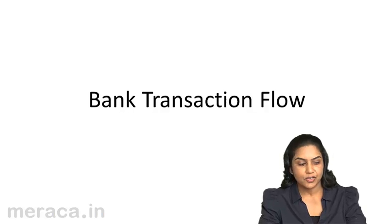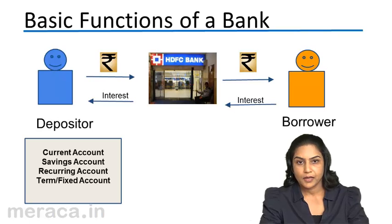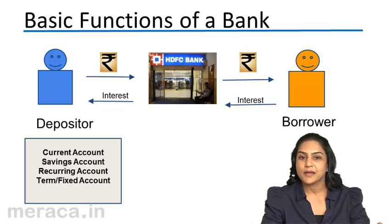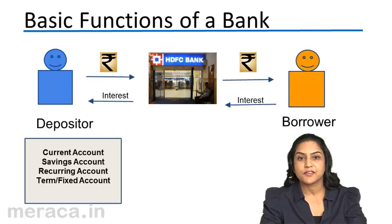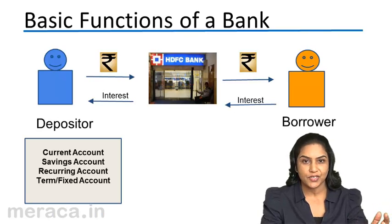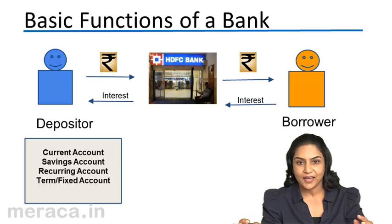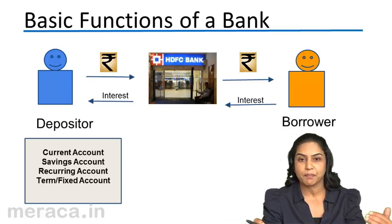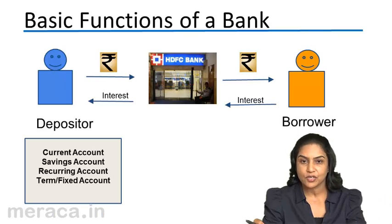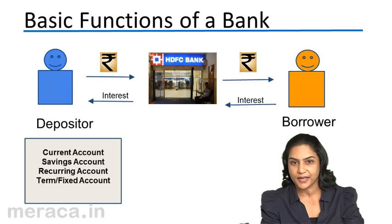The bank transaction flow. What is a bank? A bank is a financial institution. It is a financial intermediary that accepts deposits and uses these deposits to lend. So it is a link — a connector between people, between entities who have money on one hand and who need money on the other hand.